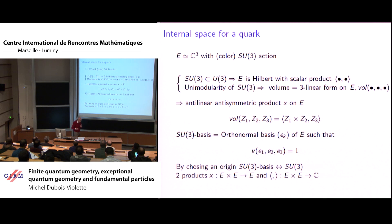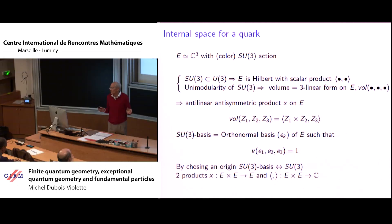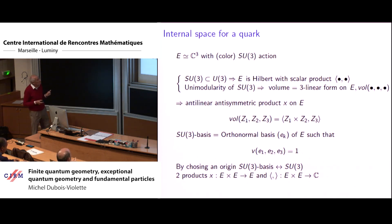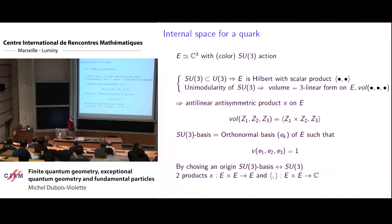If it were SU(2) I would say okay, but SU(2) is U(1) quaternionic, meaning I have a one-dimensional quaternionic Hilbert space, but here it is not the same. Here there is something more. With a scalar product and a three-form you can construct an internal product by the following formula.